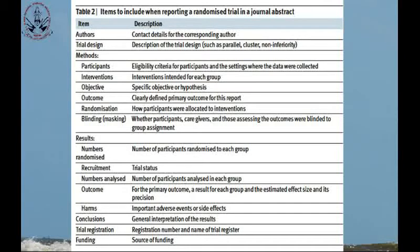When including a randomized trial in a journal abstract, some of these things must be written in the abstract itself — like the author's contact details for corresponding authors, trial design description such as parallel cluster or non-inferiority, methods including participants — meaning eligibility criteria, inclusion/exclusion criteria — and interventions for each group including dose regime and mode of application.